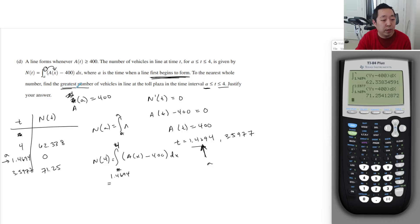To the nearest whole number, find the greatest number of vehicles. So, they actually want the Y value. So, this is the greatest number. So, it's 71 cars. Or vehicles. Sorry, I didn't say car. Vehicles. Okay? So, that would be my final answer for that one. Okay, so that one's a little bit tricky. Because you had to find the A part first. You had to find when the A(t) was equal to 400. And then, you could set up and do the candidates test like that. So, that's a little bit tricky.